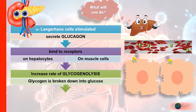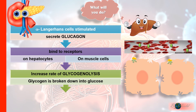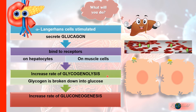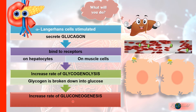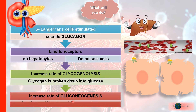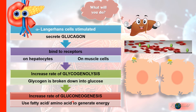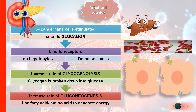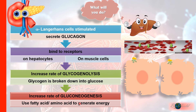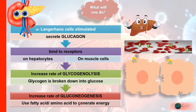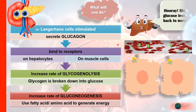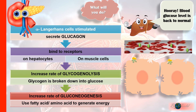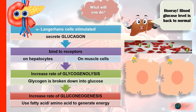If the amount of glucose is still not sufficient, the next step will be gluconeogenesis — that is, the breakdown of fatty acids and amino acids to help generate energy. In this way, the blood glucose level returns to normal.